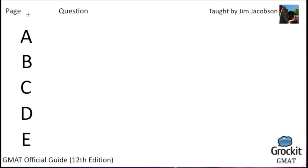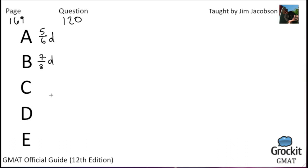Number 120 on page 169. We have answer choices: 5/6 D, 7/3 D, 10/3 D, 7/2 D, and 9/2 D. David has D books, which is three times as many as Jeff and one half as many as Paula. How many books do the three of them have altogether in terms of D?